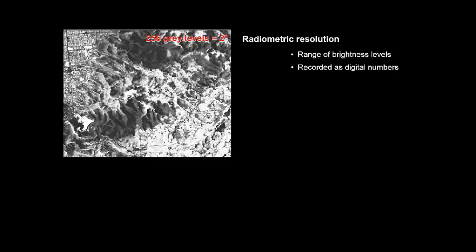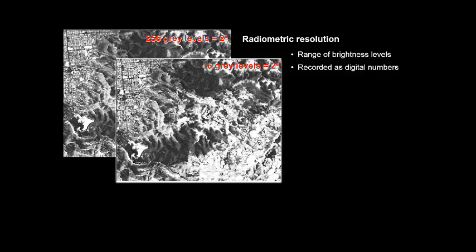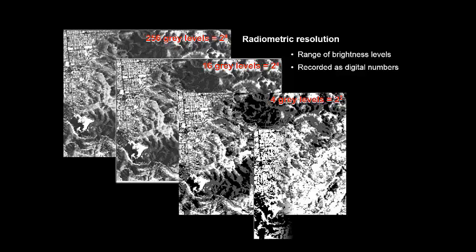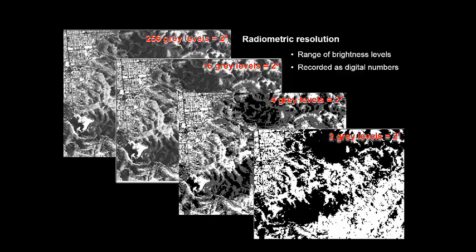Another important concept in image characterization is radiometric resolution. Radiometric resolution refers to the range of brightness levels, or the amount of information that's recorded as digital numbers. Here in this image, there are 256 levels of grey, 256 brightness levels, and this is what we call 8-bit data. This next image shows 16 levels of grey, or 4-bit data. 4 levels of grey, or 2-bit data, and 2 levels of grey, or 1-bit data. You can see as we decrease through each of these levels, there's less and less information available.